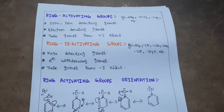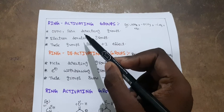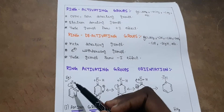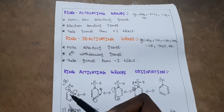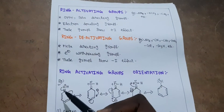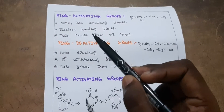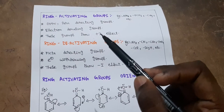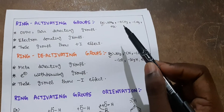Ring activating groups are ortho-para directing groups and they are electron donating groups. For example, consider a ring activating group — it donates a lone pair of electrons towards the benzene ring. That means this is a group which donates electrons, which is why we call these groups electron donating groups. These groups also show positive inductive effect (positive-I effect). Examples of ring activating groups are NH2 (amino), OCH3 (methoxy), and methyl groups.